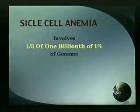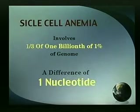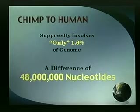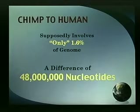And when we consider sickle cell anemia, it's one-third of that — one-third of one billionth of 1% — producing a phenomenon that is often fatal. We're talking about a difference of one nucleotide, and yet we're told, oh, it's only 1.6%, 48 million nucleotides — surely you can do that. Now you see, it looks very different.